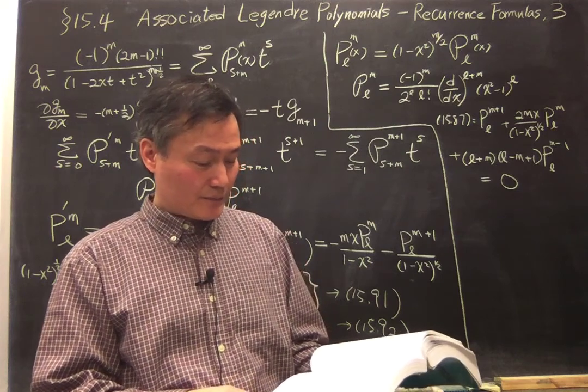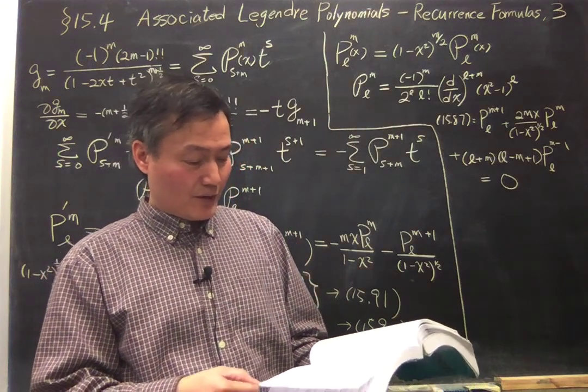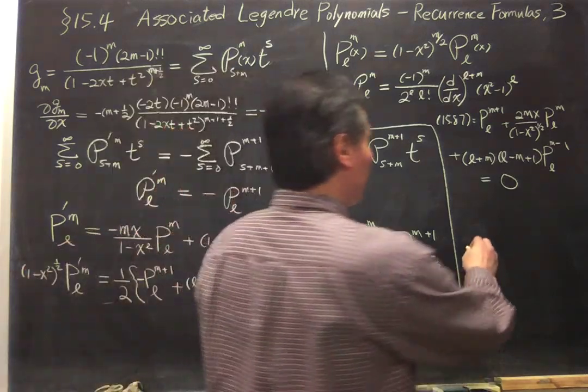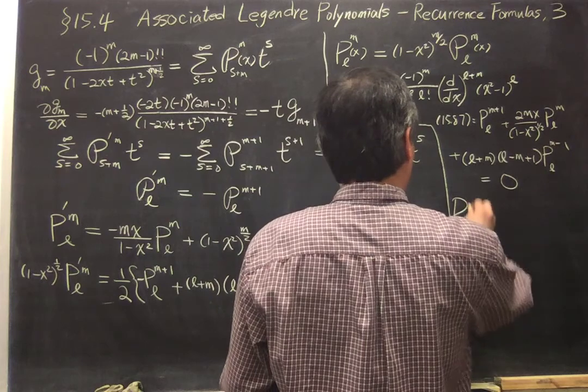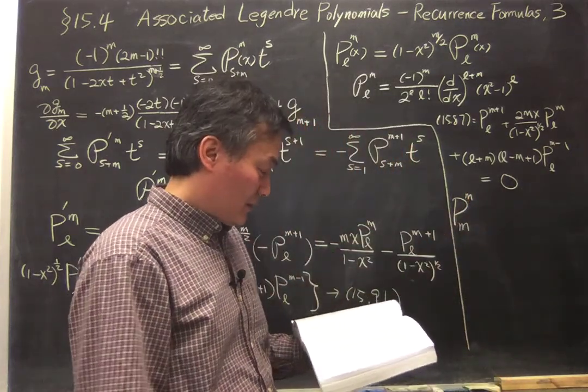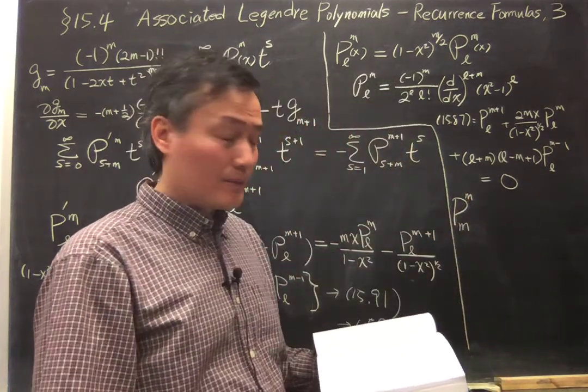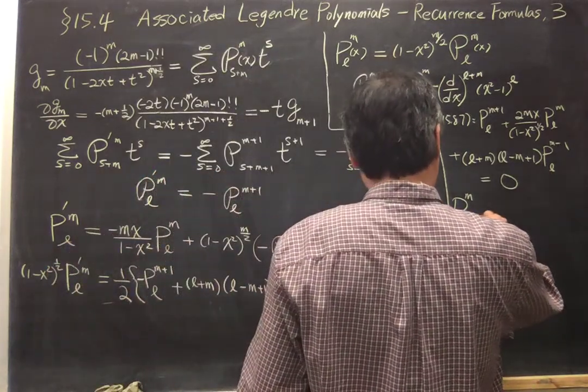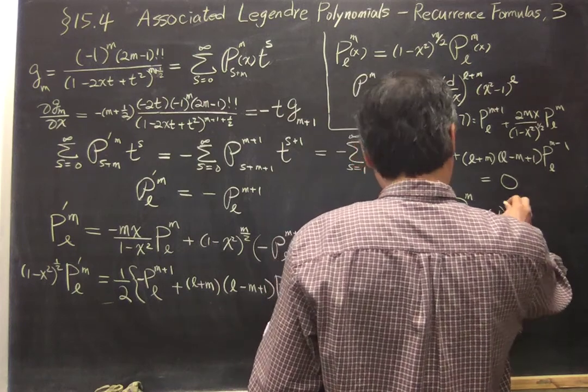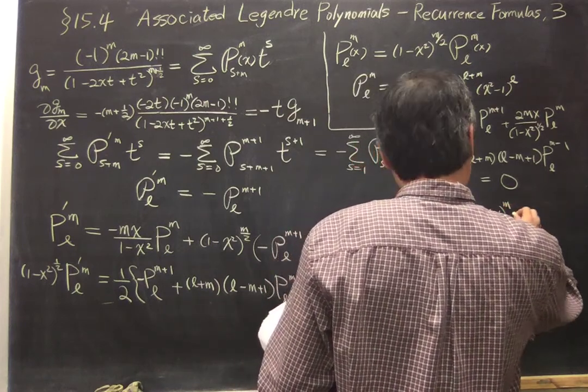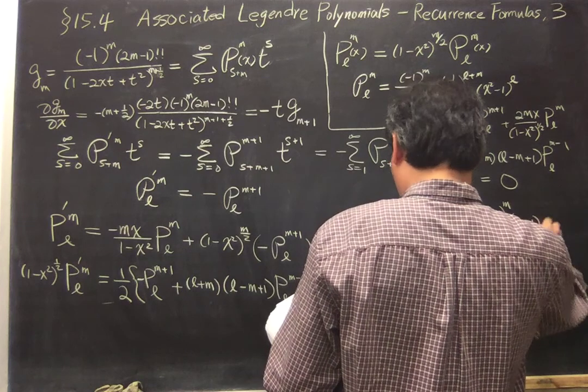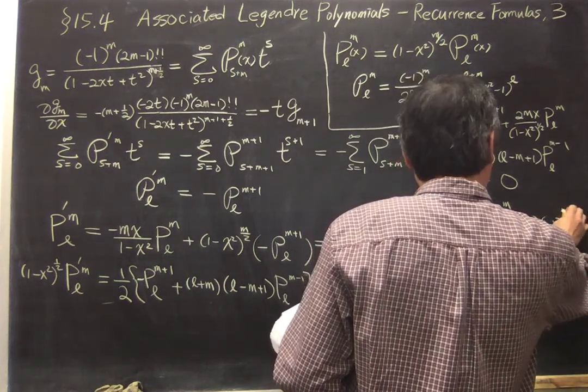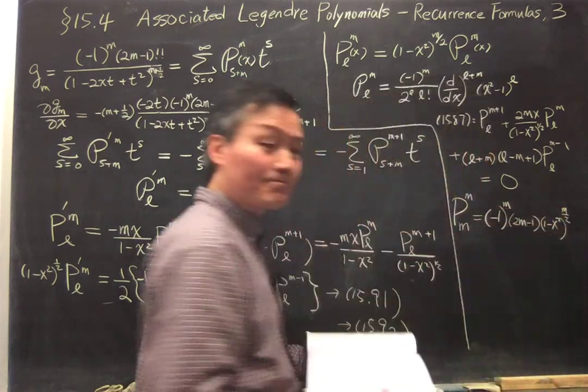Which is using the very simple fact that if both l and m are the same, the associated Legendre function is very simple, you can get that quite easily, which is 2m minus 1, 1 minus x squared to the m over 2 power.